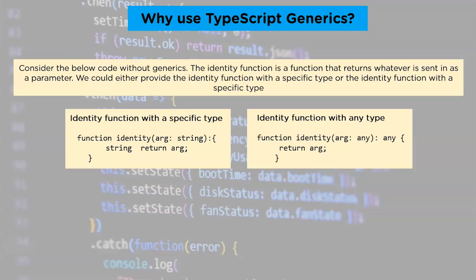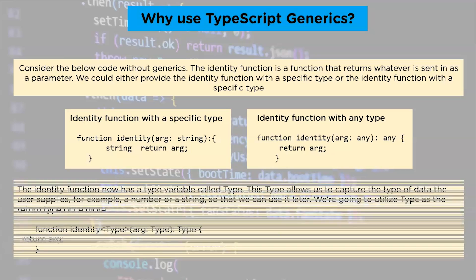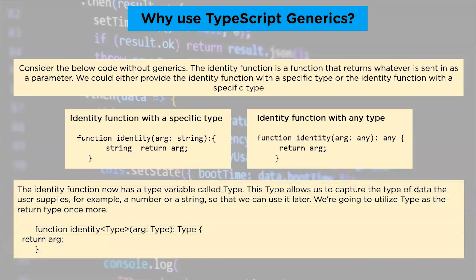We need the means to capture the argument type in such a way that we can use it to signify what has been returned as well. We will utilize a type variable here, which is a form of variable that deals with types rather than values. The identity function now has a type variable called T. This type allows us to capture the type of data the user supplies — for example, a number or a string — so that we can use it later as a return type. We can use two methods to invoke the generic identity function: passing all parameters including the type argument, or utilizing type argument inference.